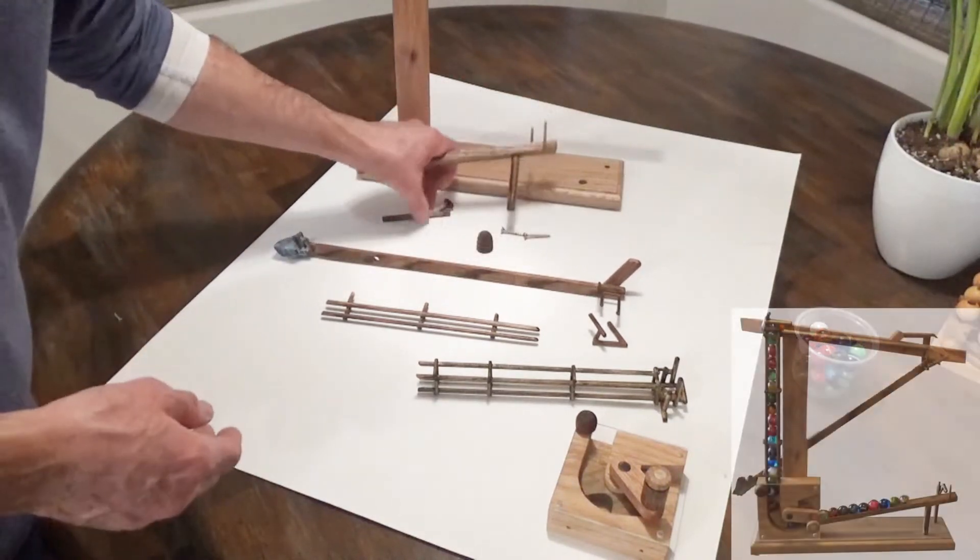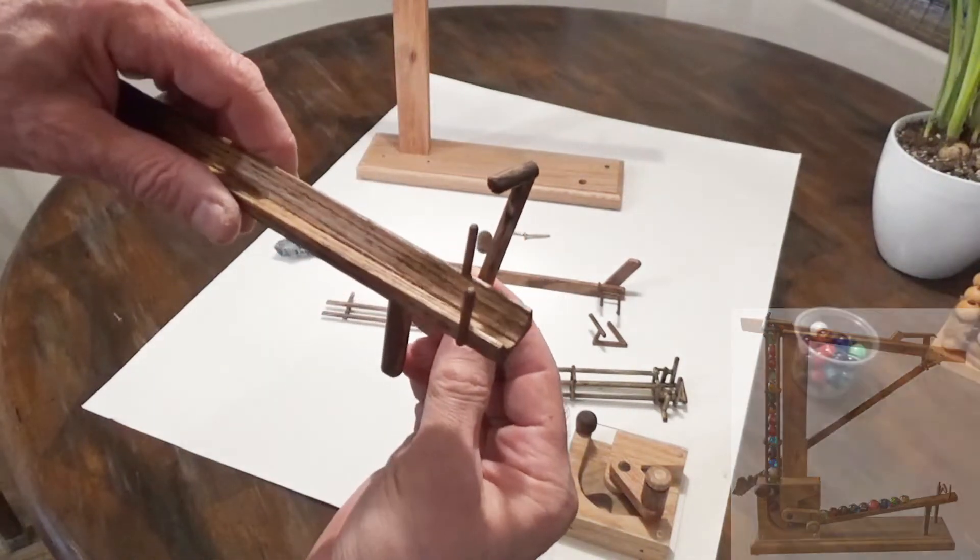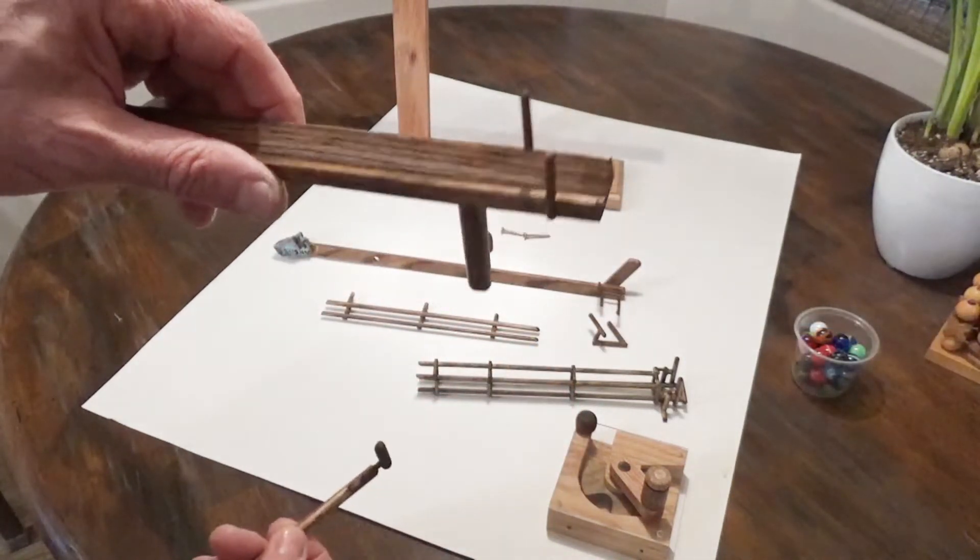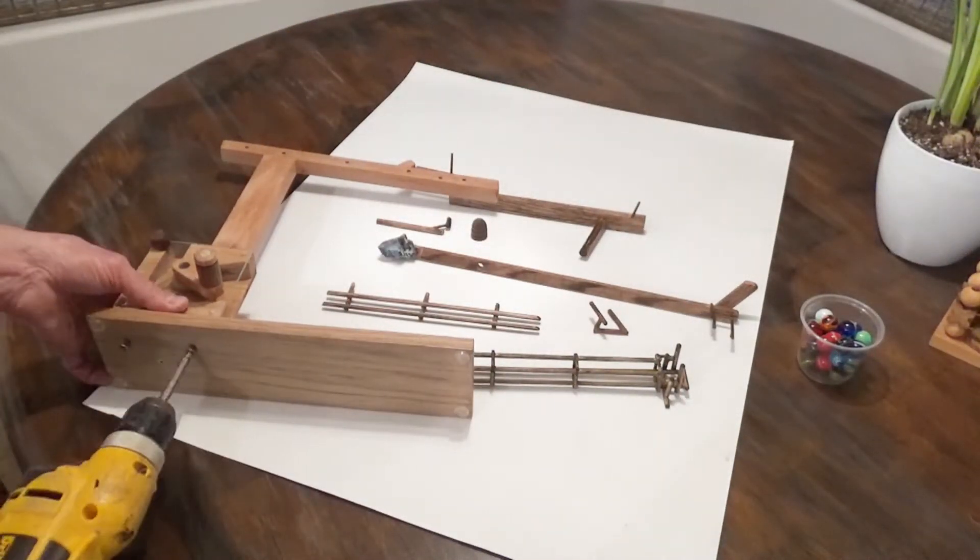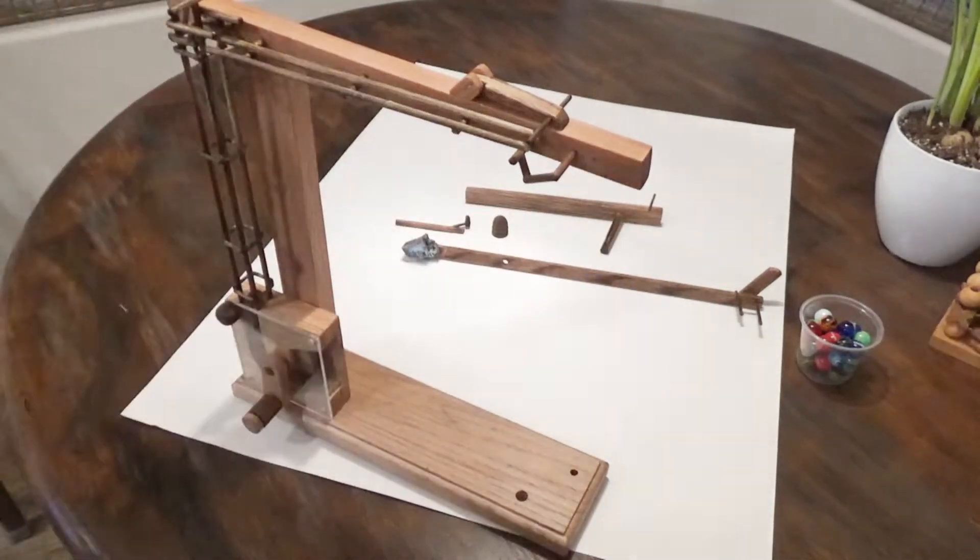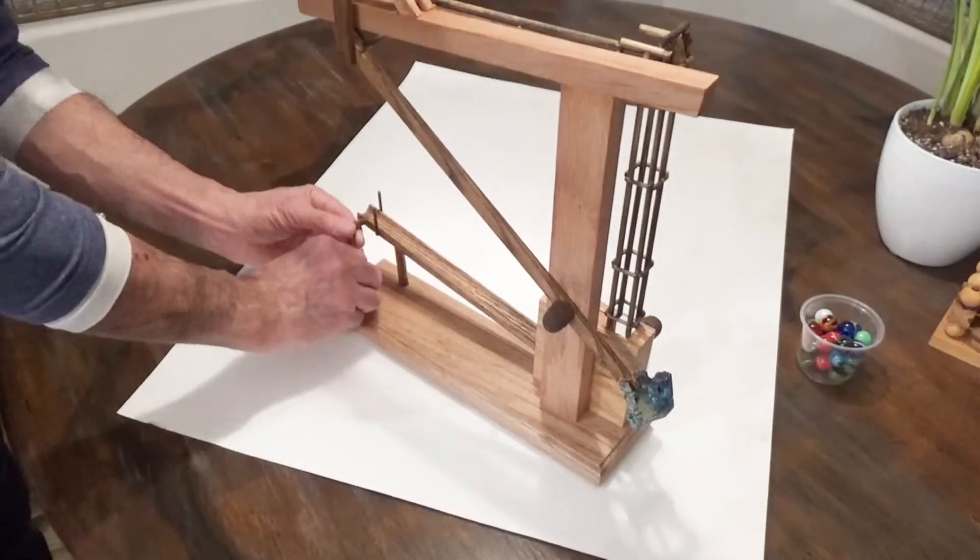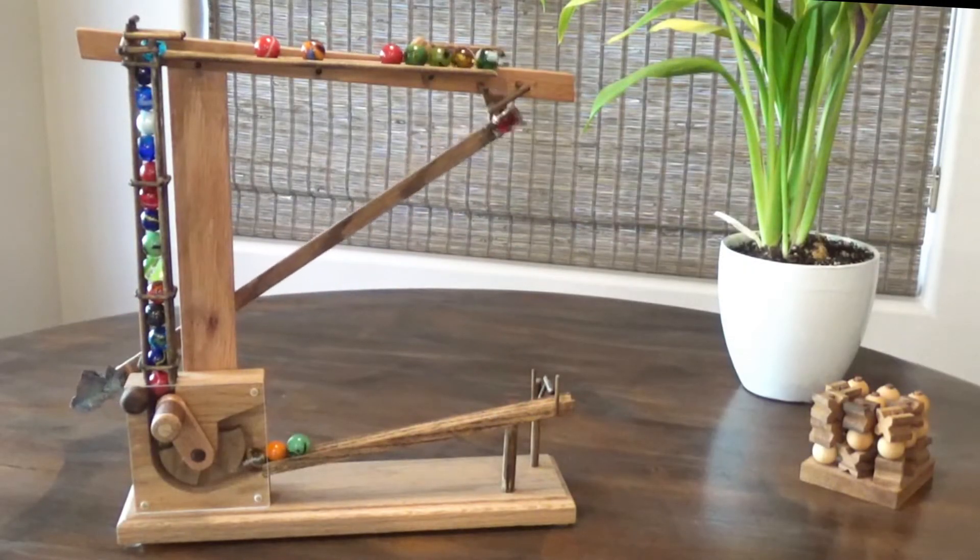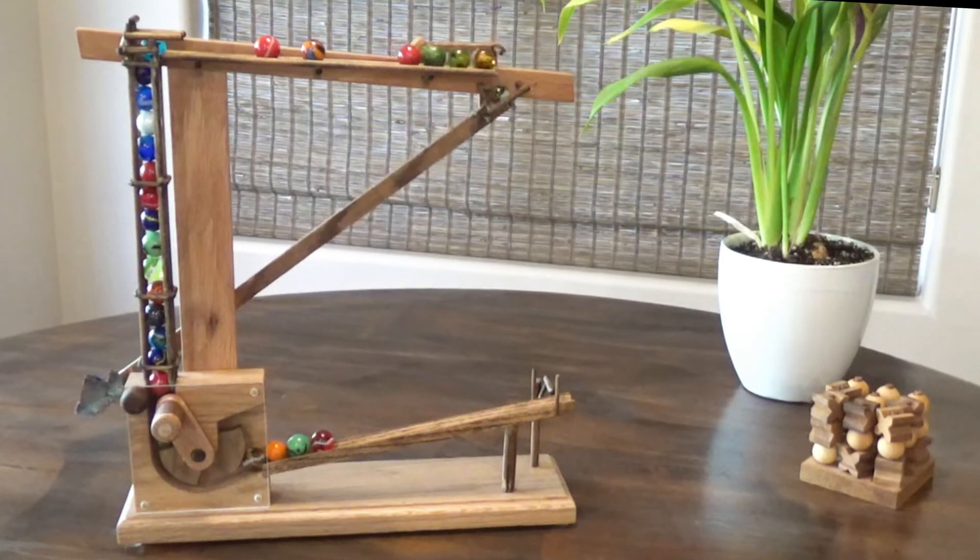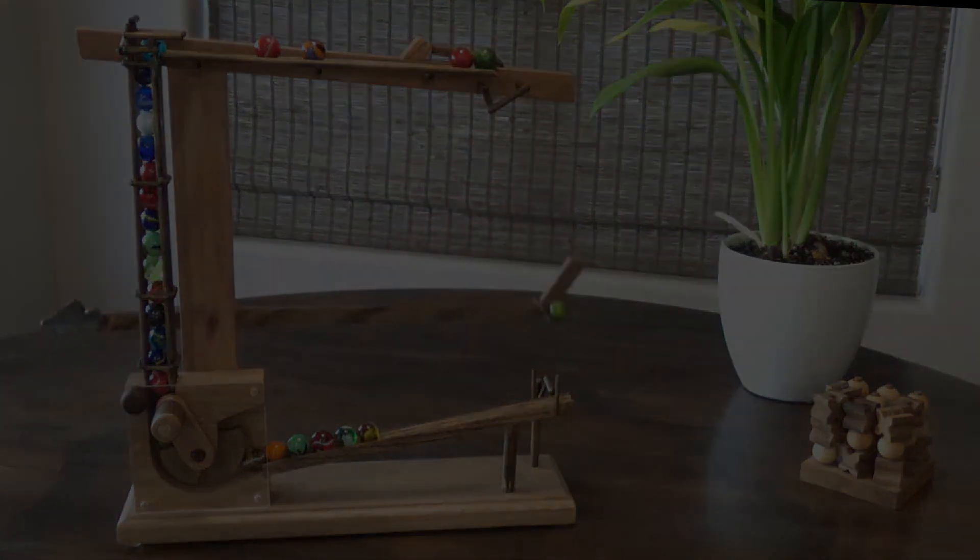Here's a part I call the ejector. It knocks the ball out of the cradle when it comes down to the bottom. The pegs sticking up catch the occasional bounce. And let's put it back together. Like and subscribe. Thanks so much.